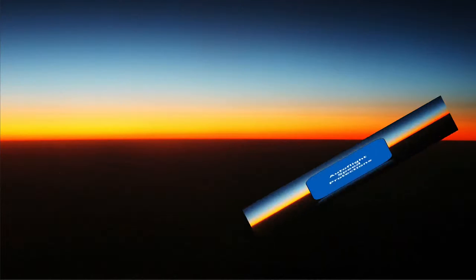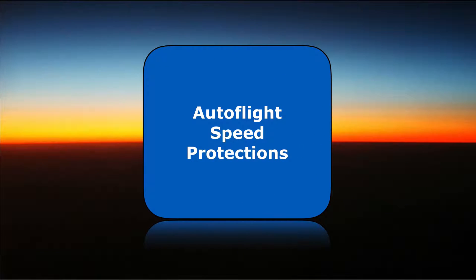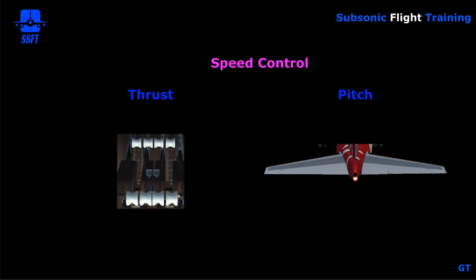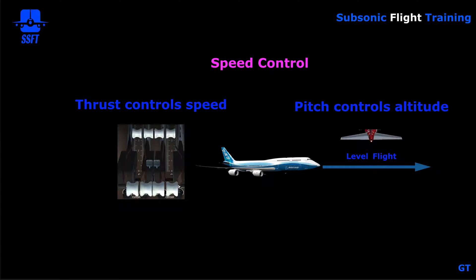Our briefing today will cover the Autoflight Speed Protections — we're looking at flight envelope protections in regards to speed. Speed can generally be controlled by the thrust levers via the autothrottle system or by pitch via the elevators. In level flight, the autothrottle, if it's engaged and active, will control speed.